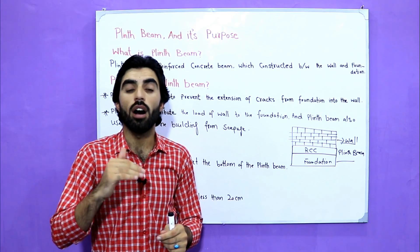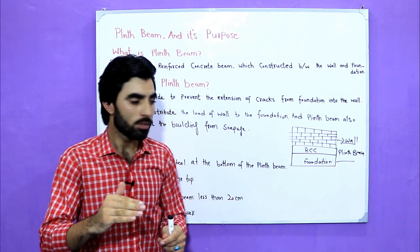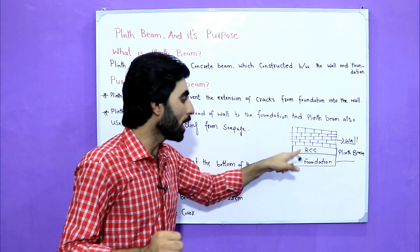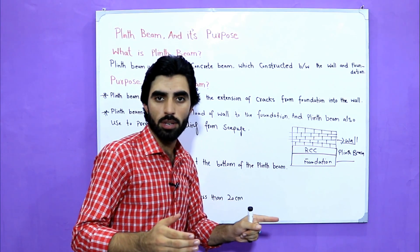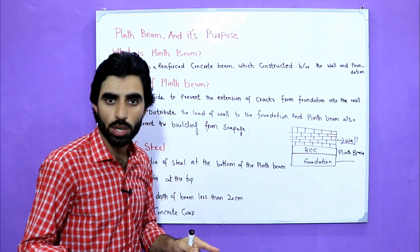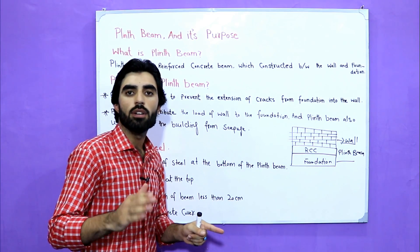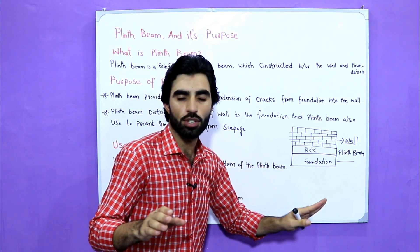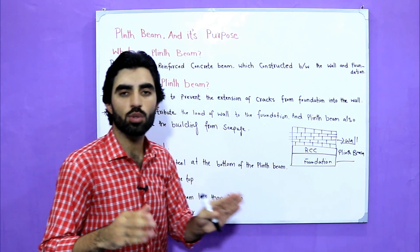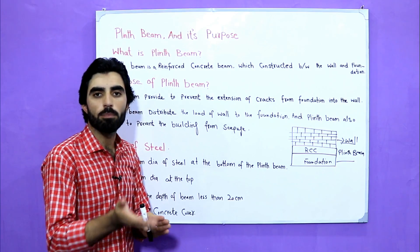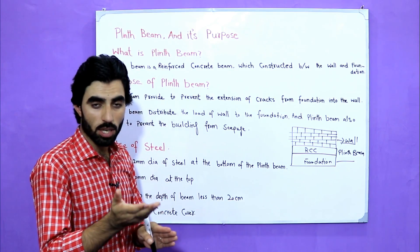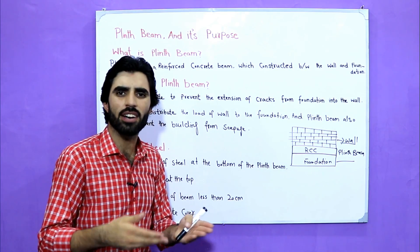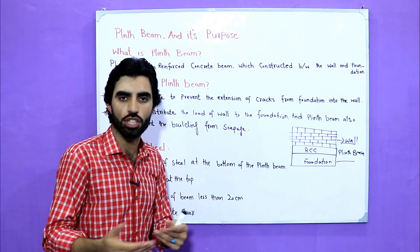Also, on the plinth beam we should provide a polythene sheet. The reason is seepage — it also protects from seepage coming up from the foundation. So you should provide a plastic or polythene sheet on the plinth beam.